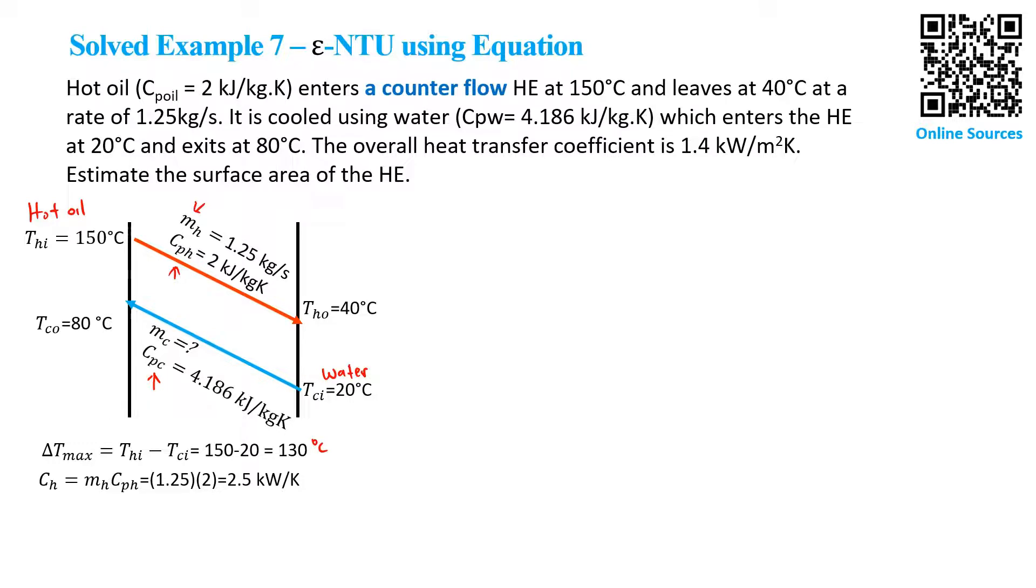We use the normal equation. Q_actual equals CH times ΔTH. We find Q_actual = 275 kW, and from that we can calculate mC. mC equals Q divided by CP of cold water divided by ΔT water, and we find mC = 1.1 kg/s.